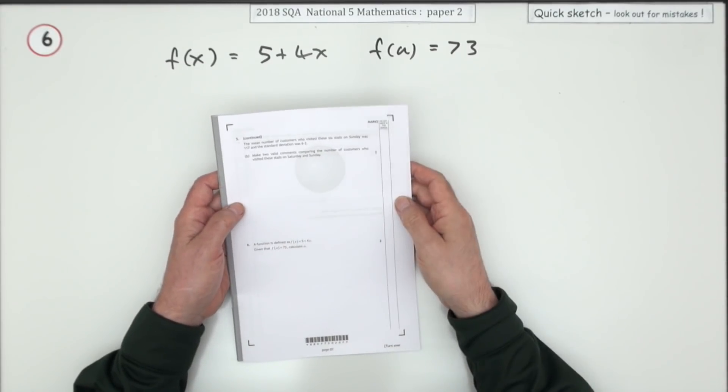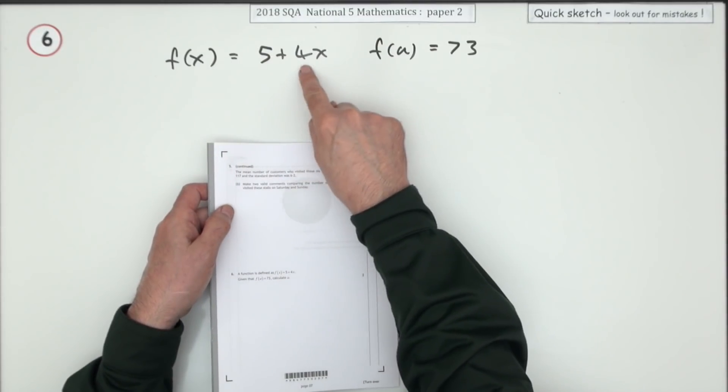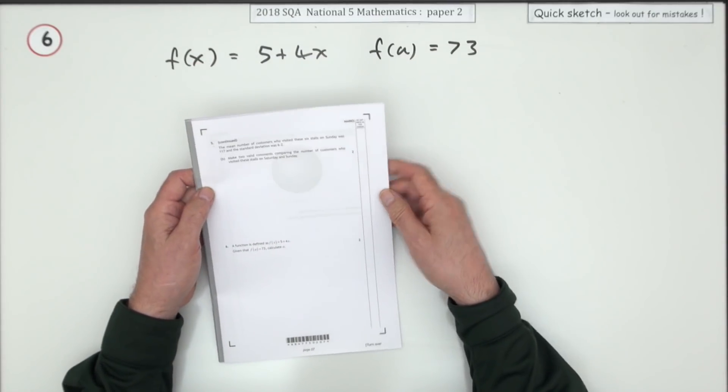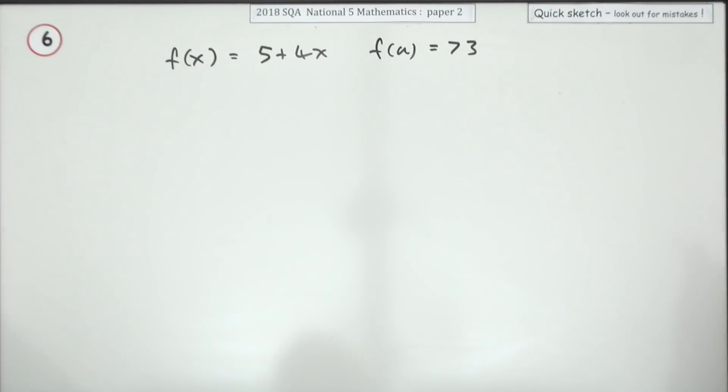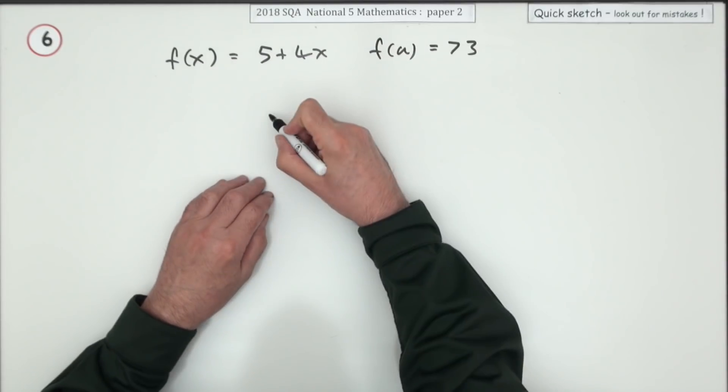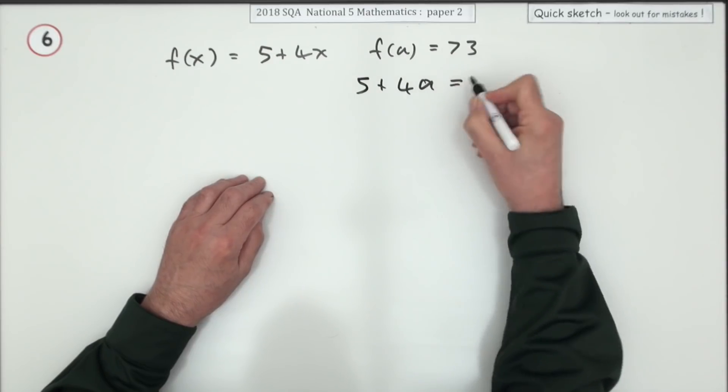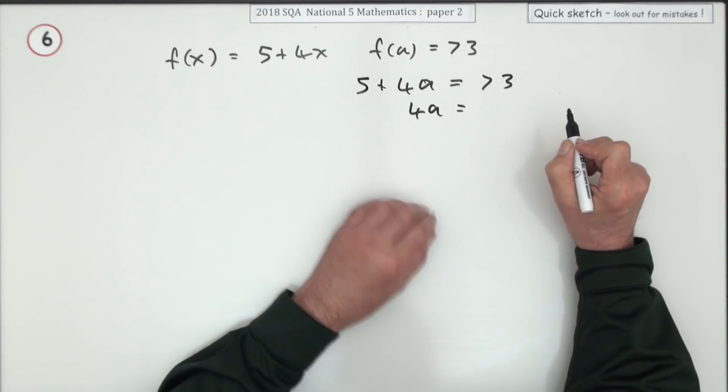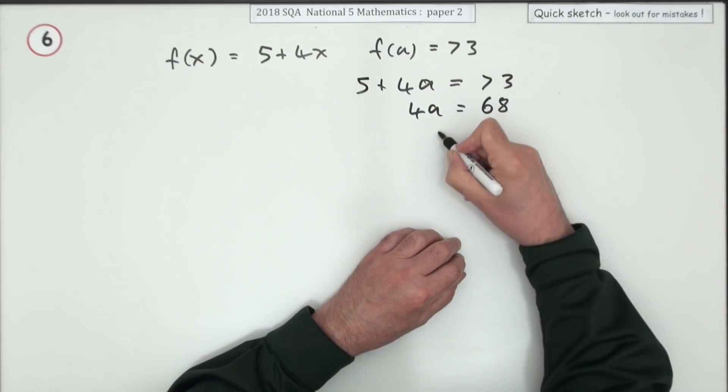Number six then. A function is defined as f of x is 5 plus 4x. That means whatever you put in, it does 5 plus 4 times what you put in. Given that f of a is 73, what's a for two marks? Well, if you put in a, then what this function will do is it will do 5 plus 4a, and that gives the result 73. So you've got some wee baby equation to solve then. Take that 5 across and subtract it, that'll be 68. Take that 4 across and divide it, and that'll be 17.